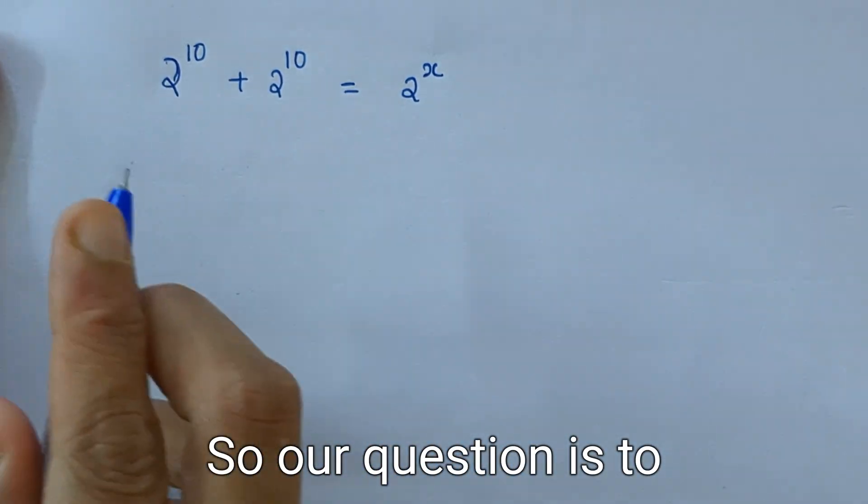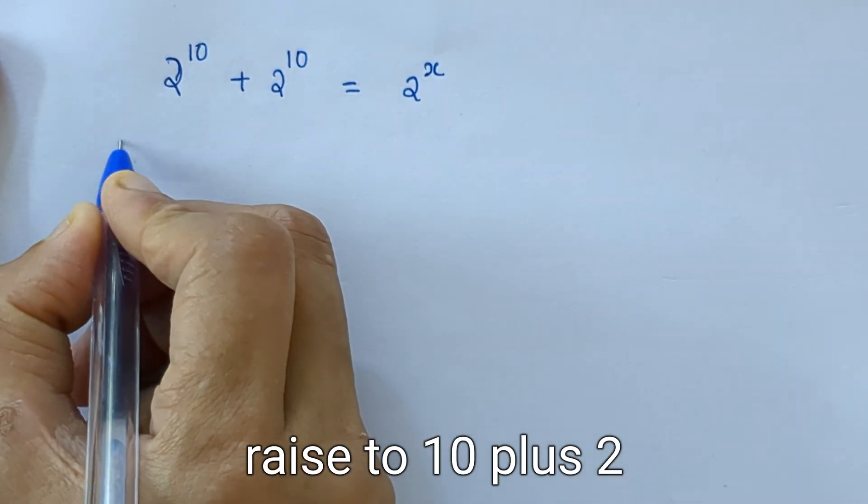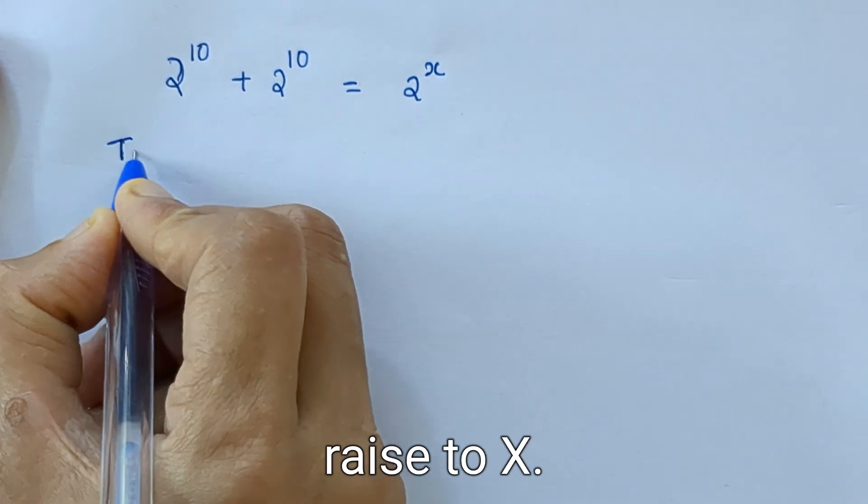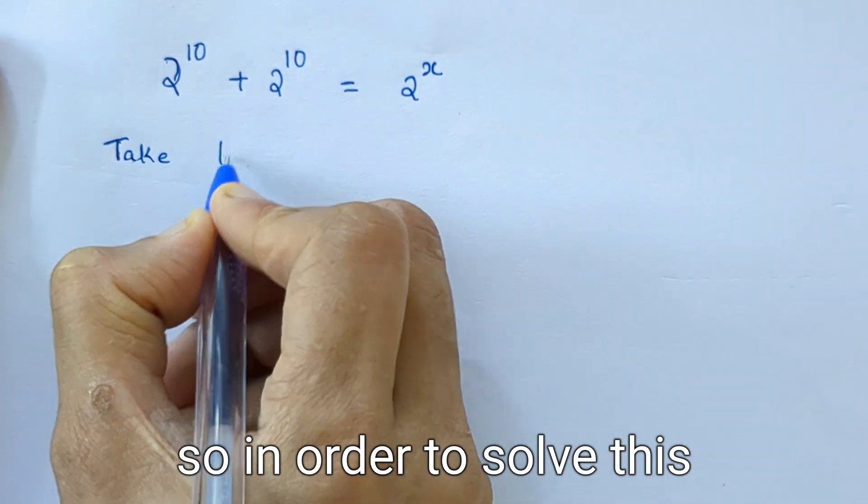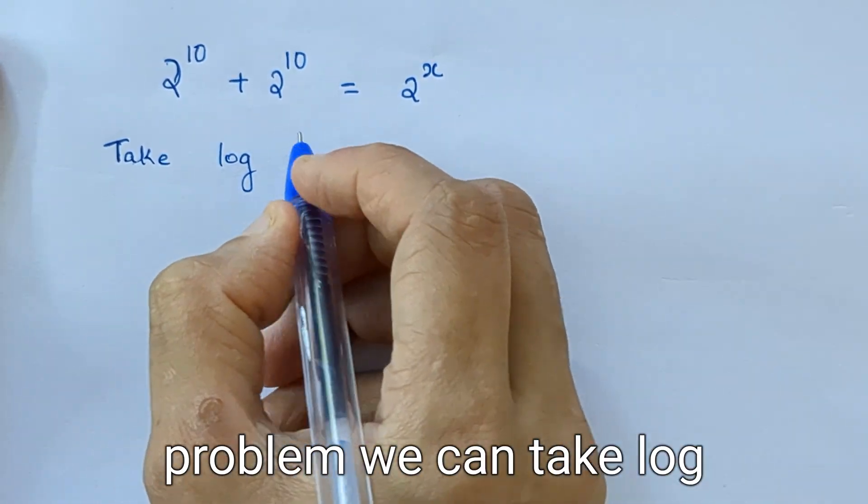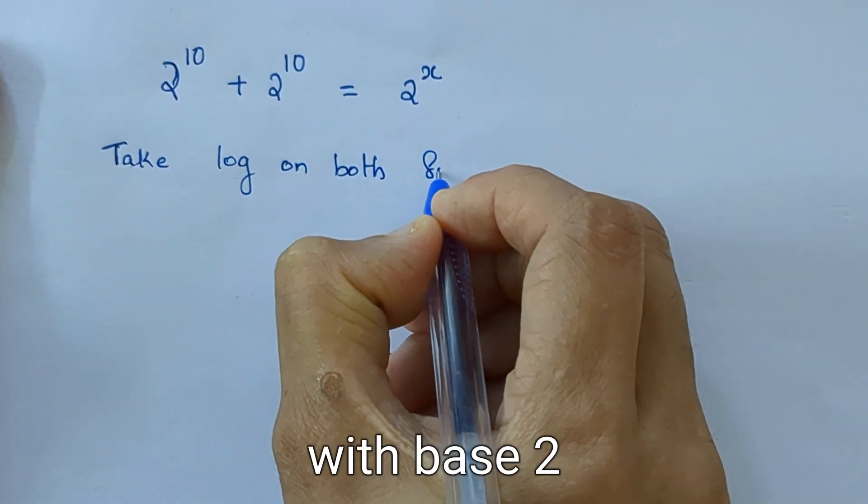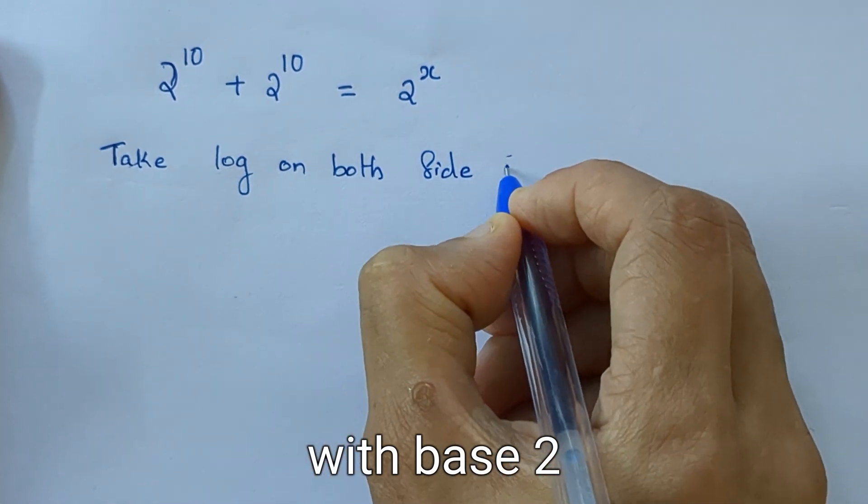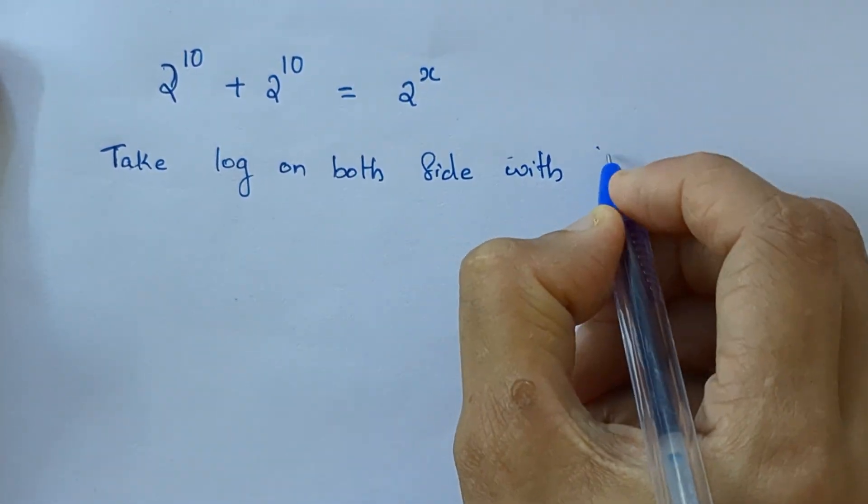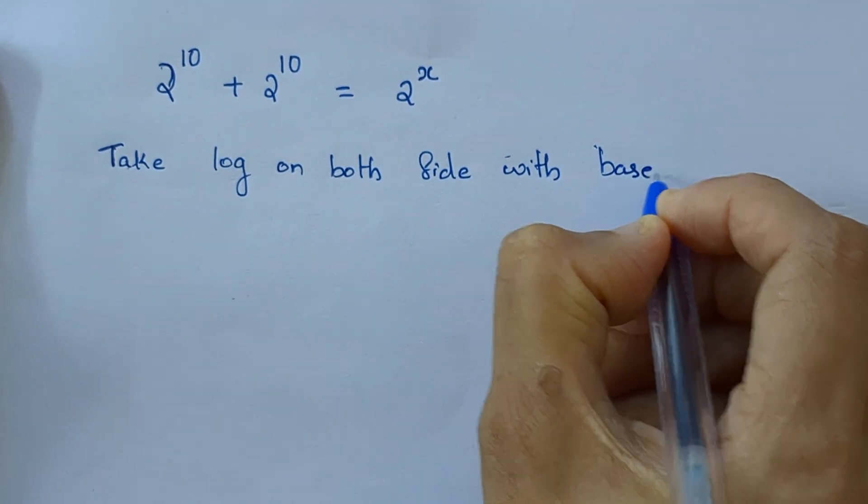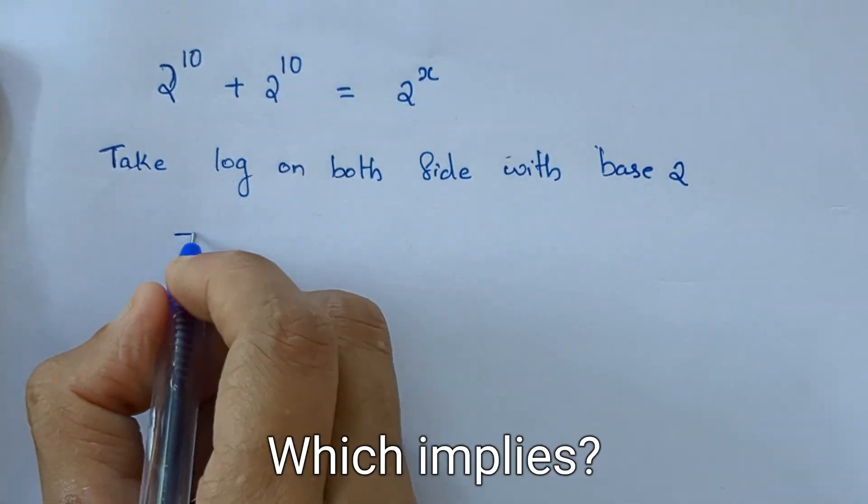Hello everyone, so our question is 2 raised to 10 plus 2 raised to 10 equal to 2 raised to X. In order to solve this problem, we can take log on both sides with base 2, which implies...